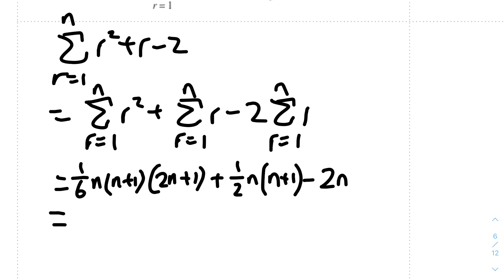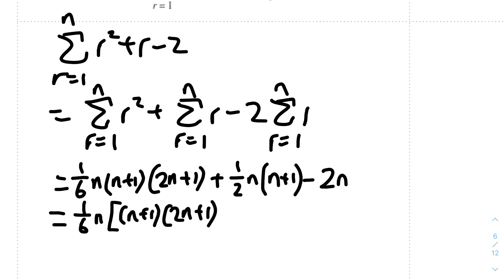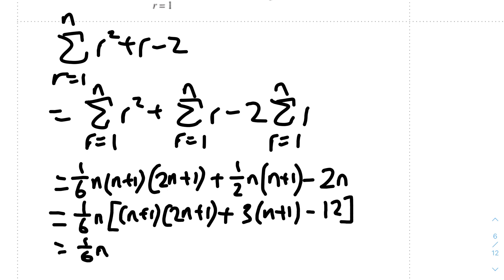Factorizing one-sixth n out: the first term leaves (n+1)(2n+1), the second gives 3(n+1), and the minus 2n divided by one-sixth n gives minus 12. So we have one-sixth n times [(n+1)(2n+1) + 3(n+1) − 12].